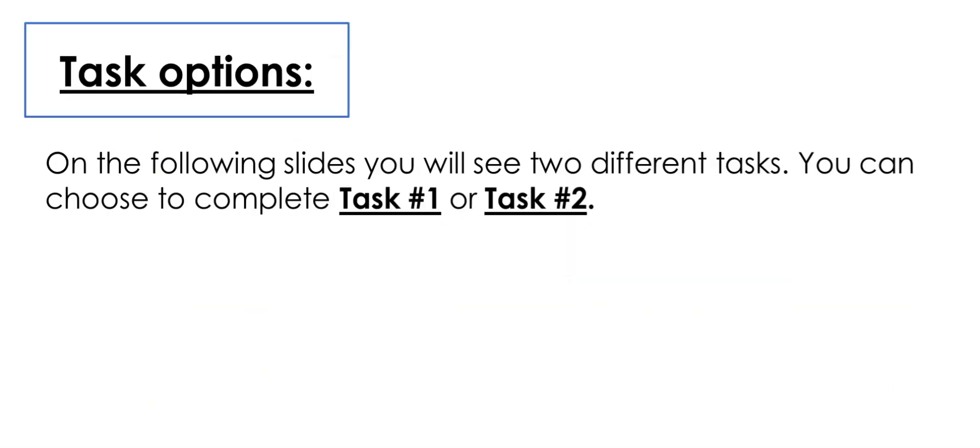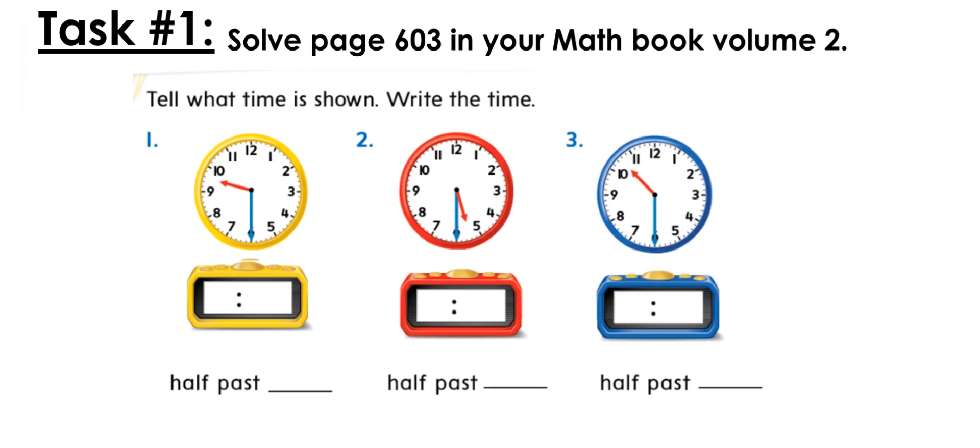Now let's go and do the tasks. For task number one, solve page 603 in your math book volume two. Please write the date on top of the page. We have three clocks. You need to write the digital clocks and say it is half past what. So pause this video, do it on your own, and then continue the video to check your answers.